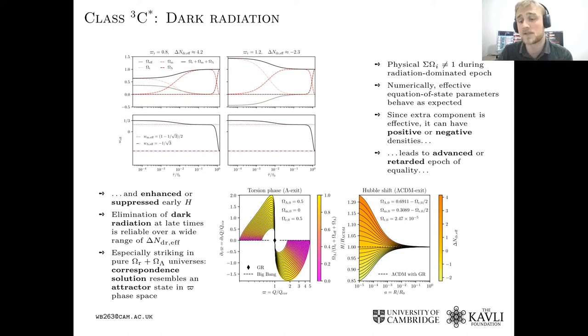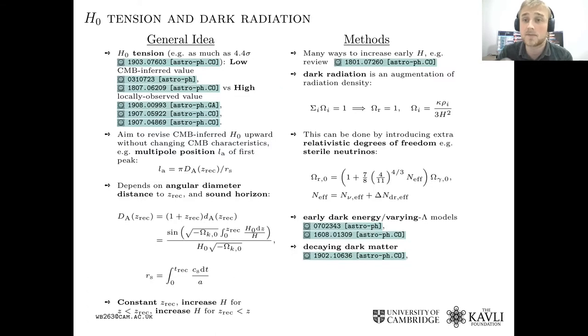This is potentially quite interesting because obviously we have problems with the Hubble tension at the moment, and a possible solution to this is to add dark radiation or extra relativistic degrees of freedom in the early universe. There are various problems with this, of course, so we can only reduce it to a few sigma. And there are also various problems with collisions with Big Bang nucleosynthesis constraints as well, but it's still quite a popular model.